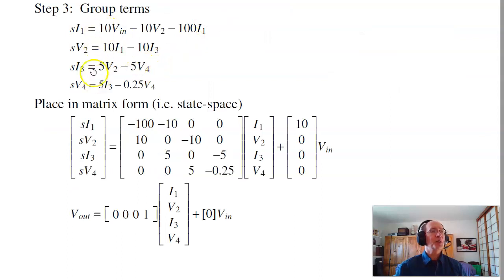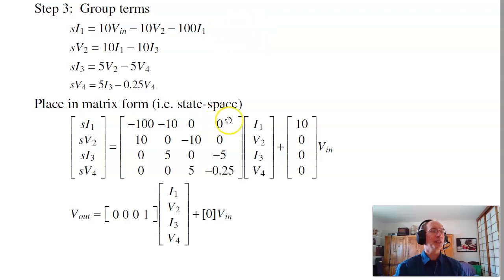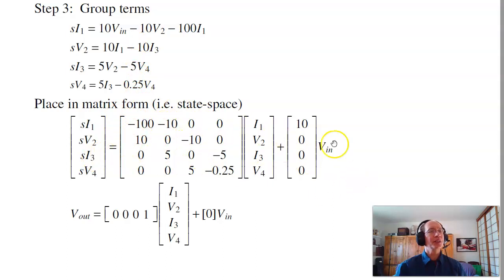For state space, I take those four equations and solve for the four derivatives, then put them in matrix form. For example, the first equation is i1-dot equals 10·V_in minus 100·i1 minus 10·v2, with zeros for i3 and v4 since they don't affect that equation. The second equation: v2-dot equals 10·i1 minus 10·i3. Put those together and I get the system dynamics — x-dot equals Ax plus Bu. Here's A and here's B.